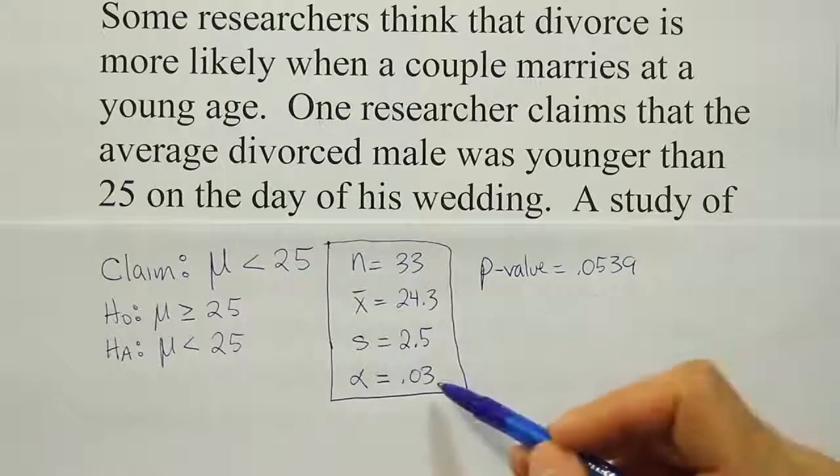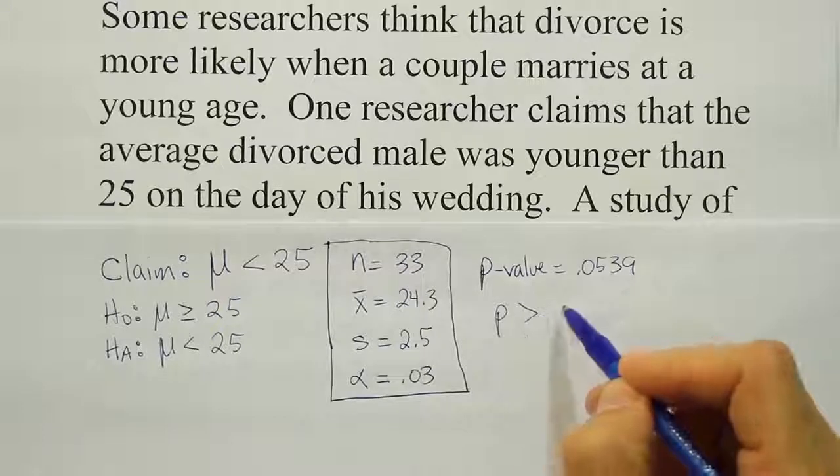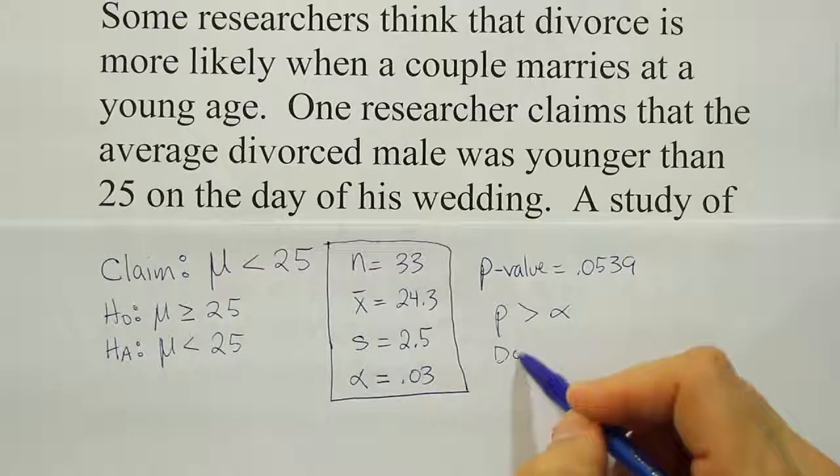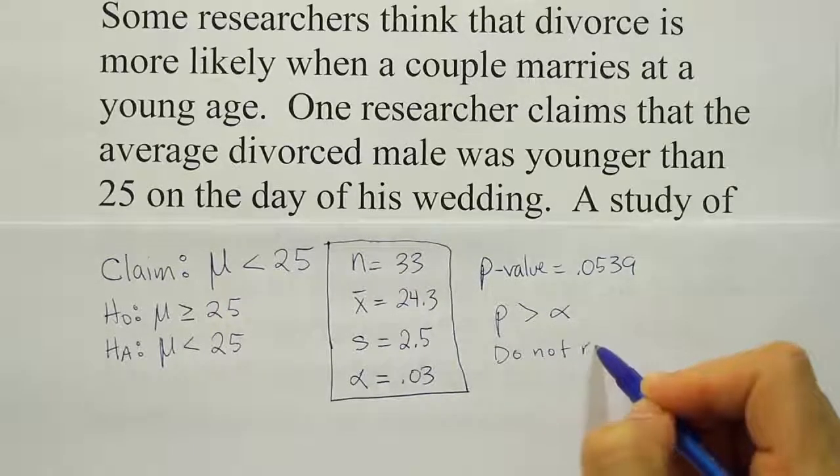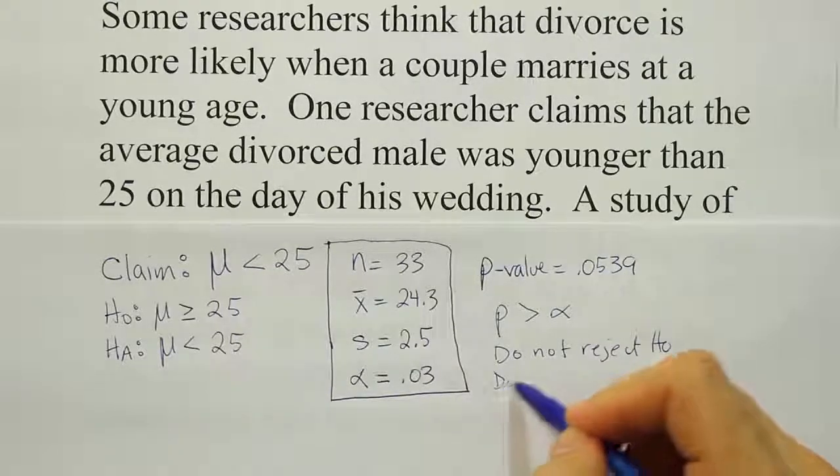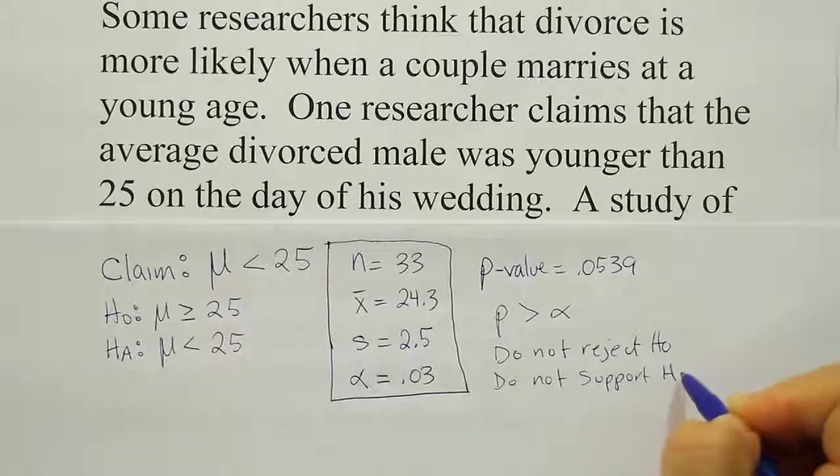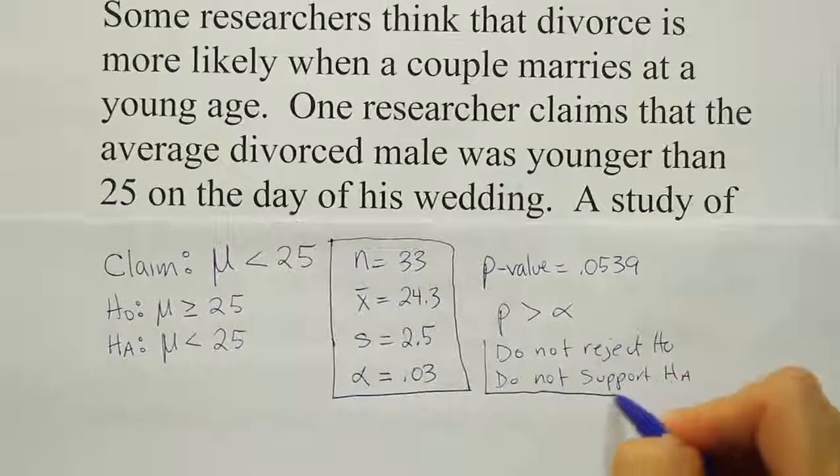So we're going to simply say, in this case, the p-value is larger than alpha. So since p is greater than alpha, we do not reject H0. And that means we do not support HA. And that's our initial conclusion.